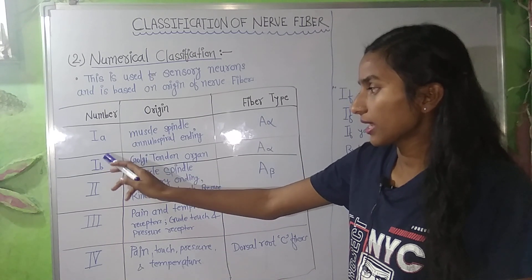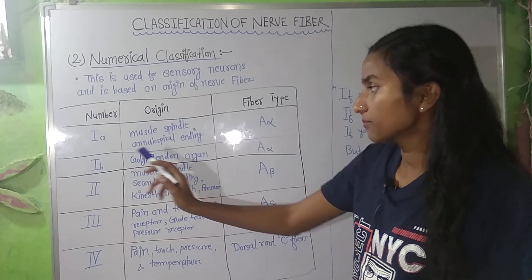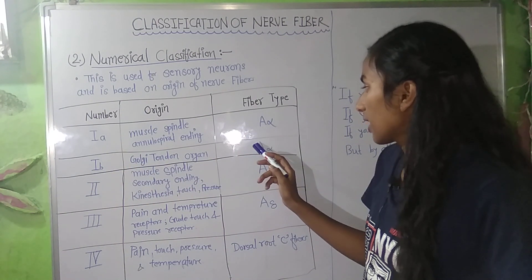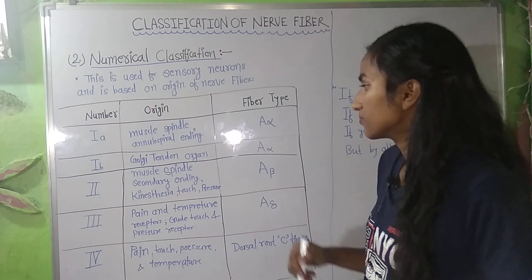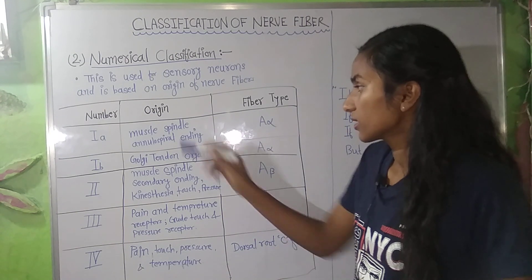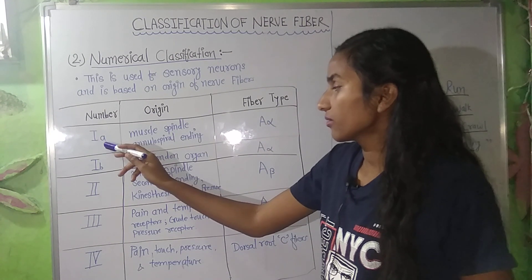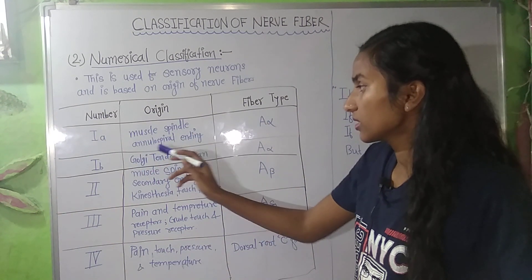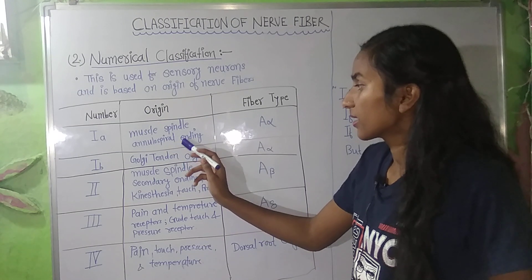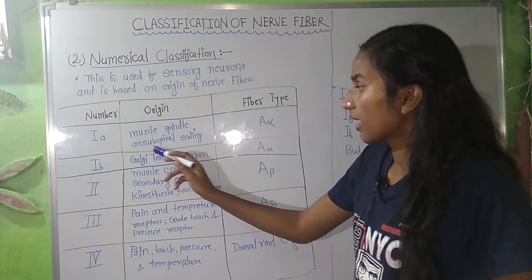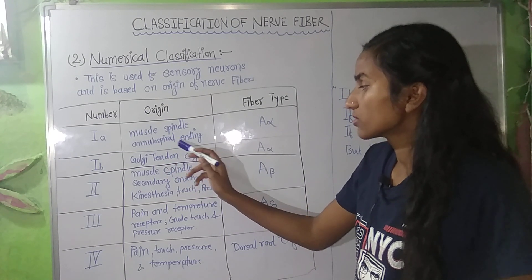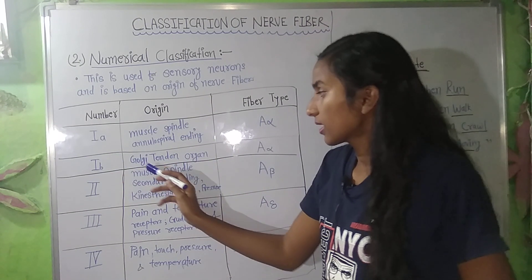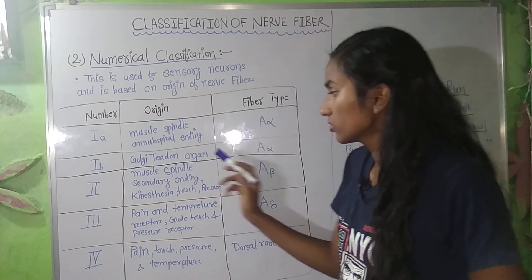Number 1A and 1B correspond to fiber type A-alpha. The origin of 1A is the muscle spindle annulospiral ending, and 1B is the Golgi tendon organ.